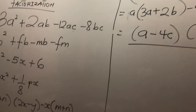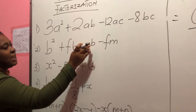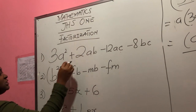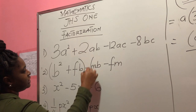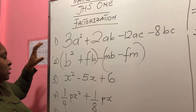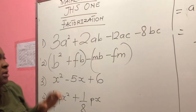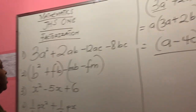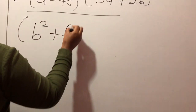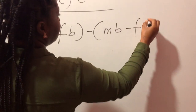Now let's pick my next question. The next question is: B squared plus FB minus MB minus FN. I can group this and I can group this, because they all have common factors or common variables. There is a B here and a B here. There is an M here and an M here. So I have B² plus FB minus MB minus FN.